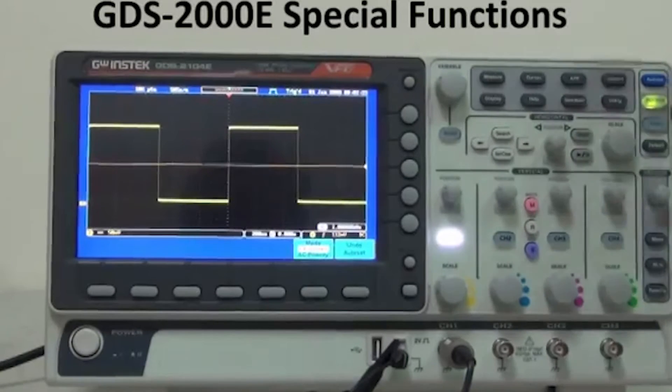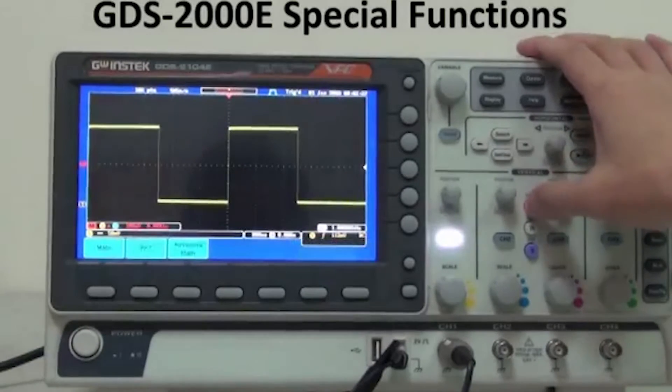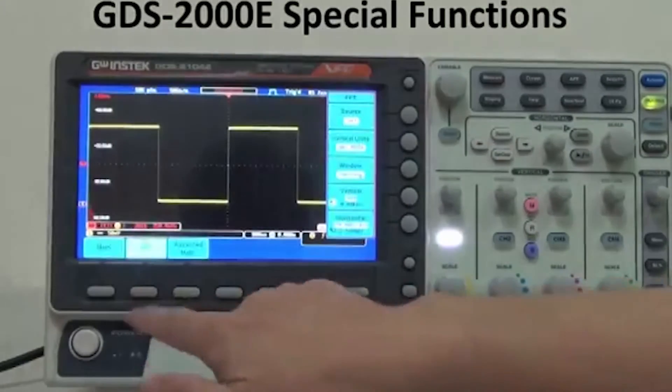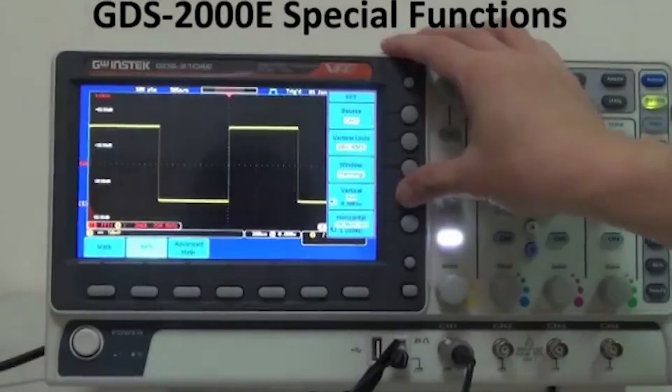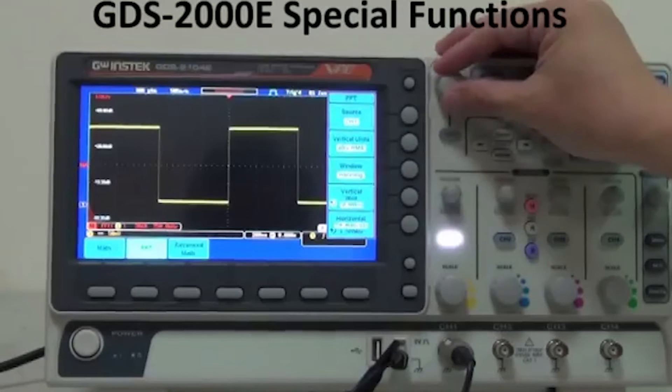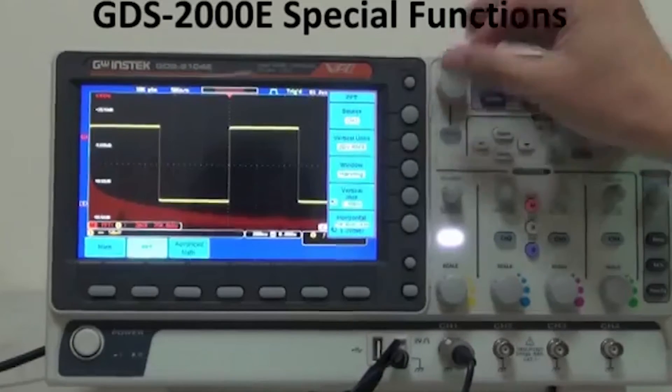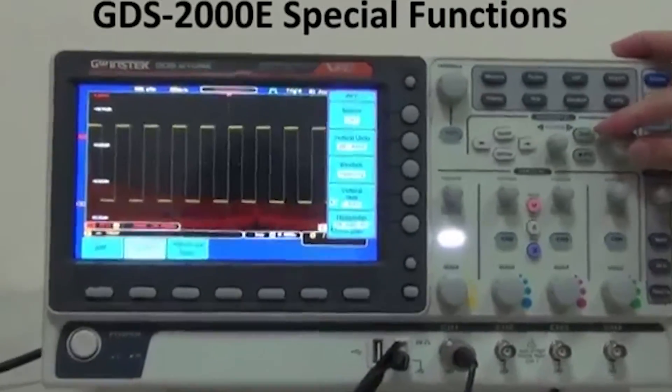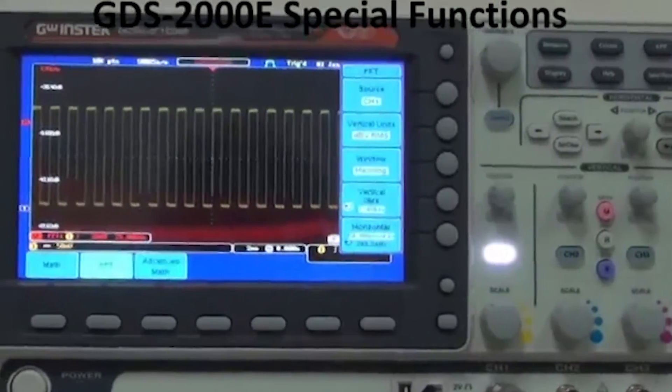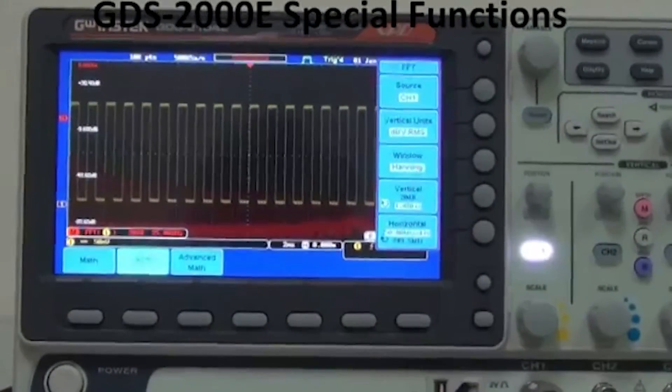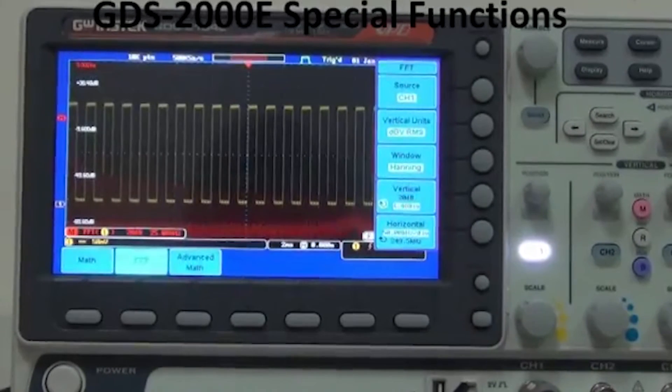First, select math, FFT, and adjust variables to see clear FFT waveforms and DV values.